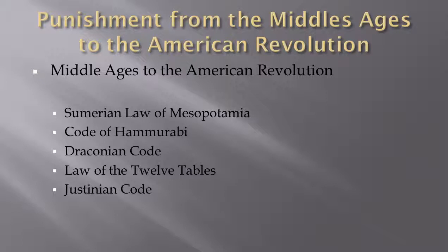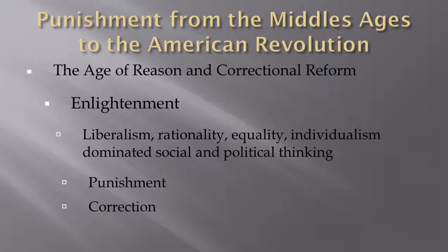The Justinian Code was an evolution of that which further continued to establish those best practice elements moving forward. From there, we moved into the age of the Enlightenment, and the first time that we started to talk about what we consider correctional reform. This Enlightenment period really moved us to look at things with a more liberal approach. It introduced rationality and equality amongst all people, and really started to spark the idea that we needed a more equitable methodology in the establishment of punishment and this first concept of correction.